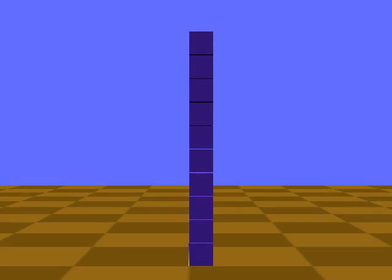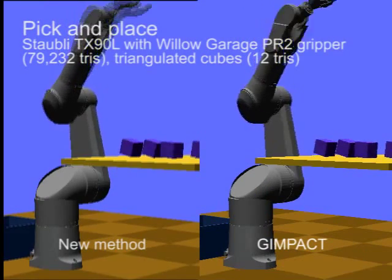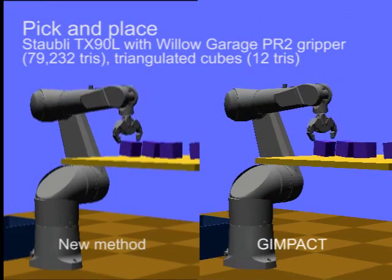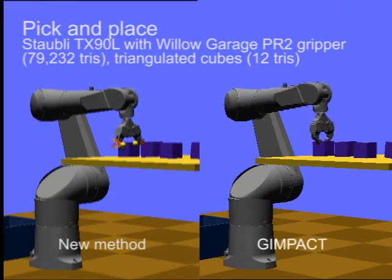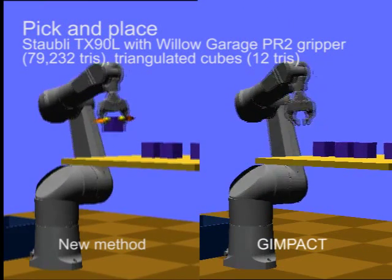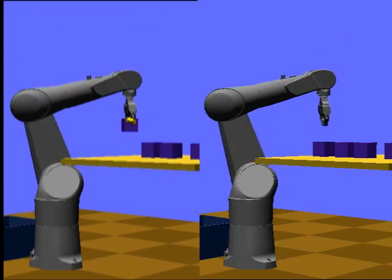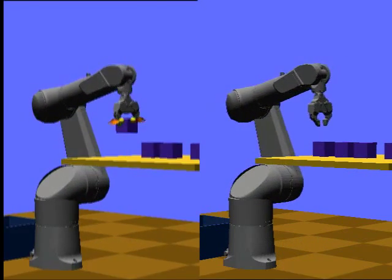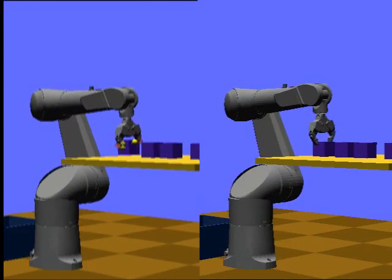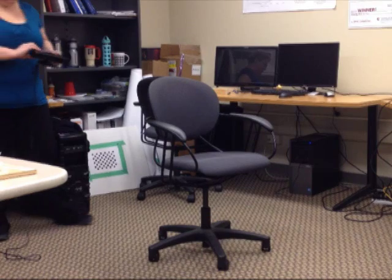This example shows the new method simulating a finely meshed gripper picking up a coarsely meshed box. Using GIMPACT, the small triangles of the gripper pass through the box, leading to incorrect simulation.